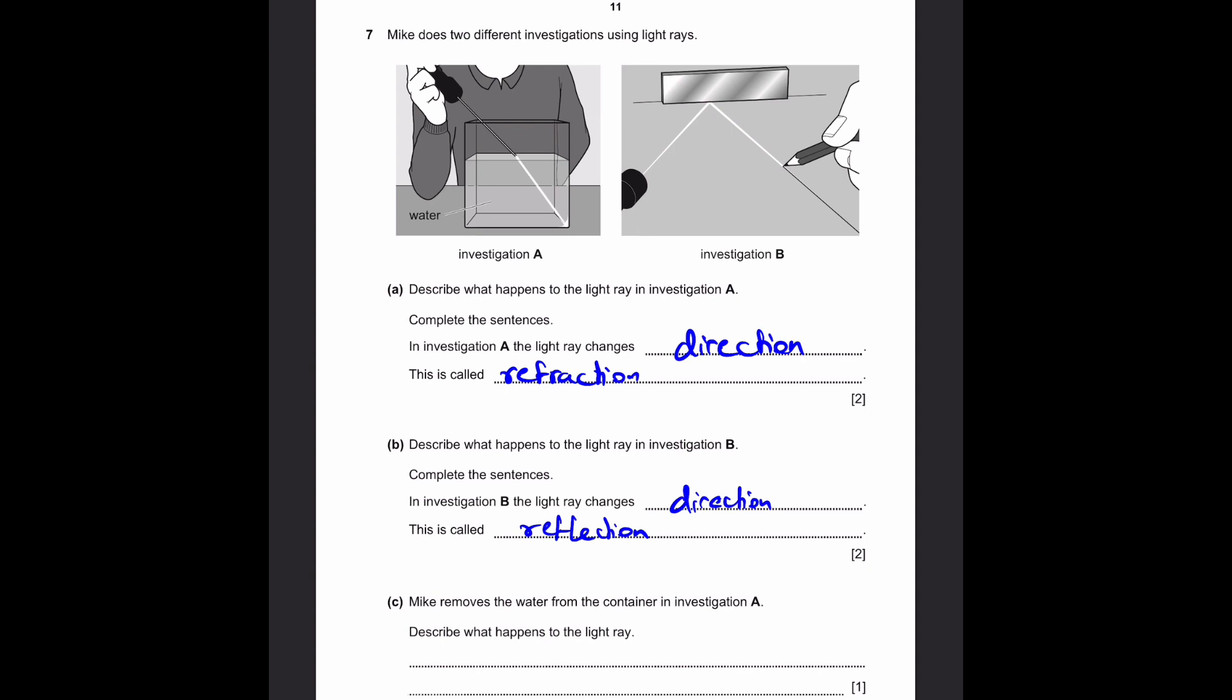Part C. Mike removes the water from the container in investigation A. Describe what happens to a light ray. Well, if the water is not in the container, that means the light ray does not have a second medium to pass through, so it continues straight. The light ray continues straight. That's our answer.